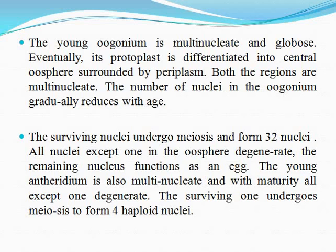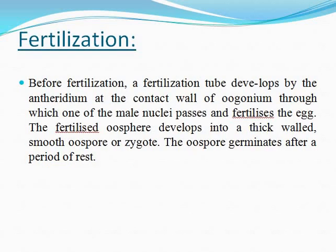The young antheridium is also multi-nucleate, and with maturity all nuclei except one degenerate; the surviving one undergoes meiosis to form four haploid nuclei. During fertilization, one nucleus from the antheridium and one nucleus from the oogonium (oosphere) fuse. The fertilized oosphere forms a smooth oospore or zygote, which germinates after a period of rest.